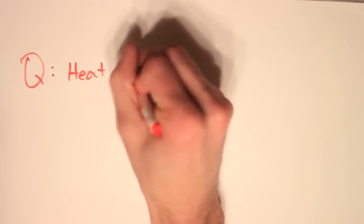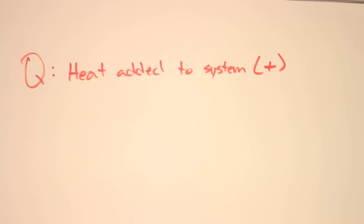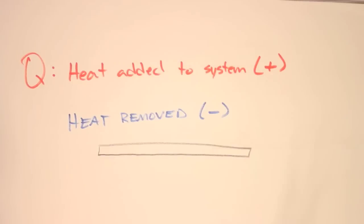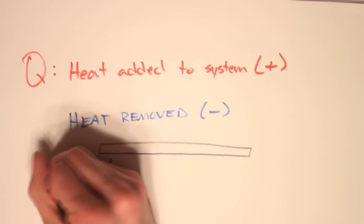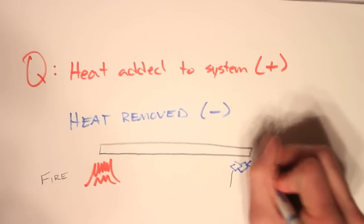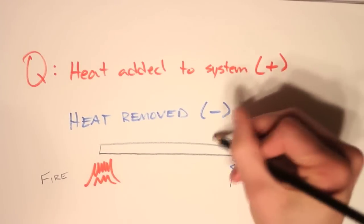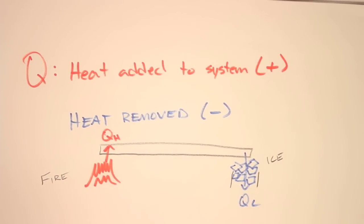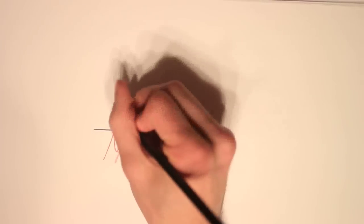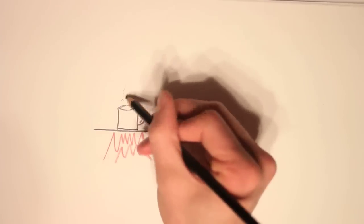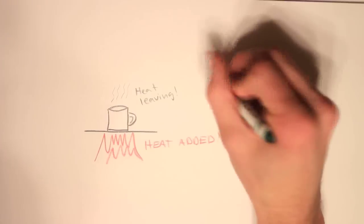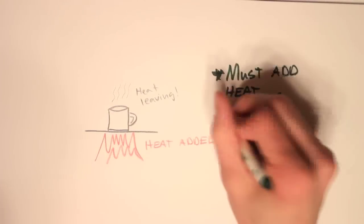Q is the heat added or removed from a system. When heat is added to a system it is positive; when it is removed it is negative. For instance, if I have a large metal rod with one end over a fire and the other end over an ice bath, heat is being added from the fire and removed over the ice bath. A cup of coffee left unattended will become cold because the surroundings are colder than the coffee. To keep the coffee at the same temperature I must add heat to compensate, because all things try to achieve thermal equilibrium.